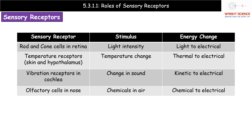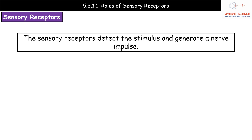The last example is the nose, where we have olfactory cells that respond to chemicals in the air. Because they respond to chemicals, we're converting chemical energy to electrical energy. In each of these examples, they start with some kind of stimulus with different types of energy, but what the energy is converted into is the same in each case — electrical energy — because those sensory receptors detect the stimulus and generate a nerve impulse, which is an electrical transmission.